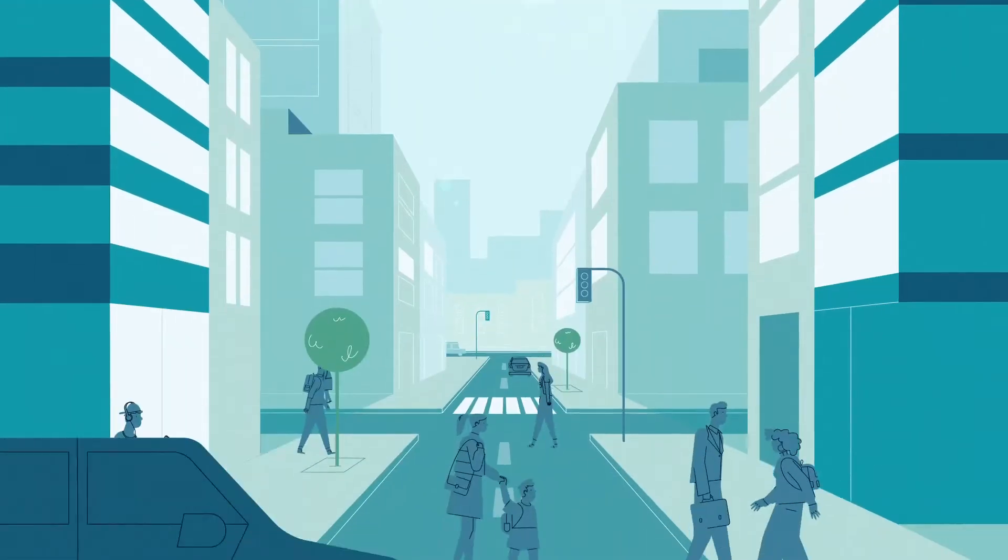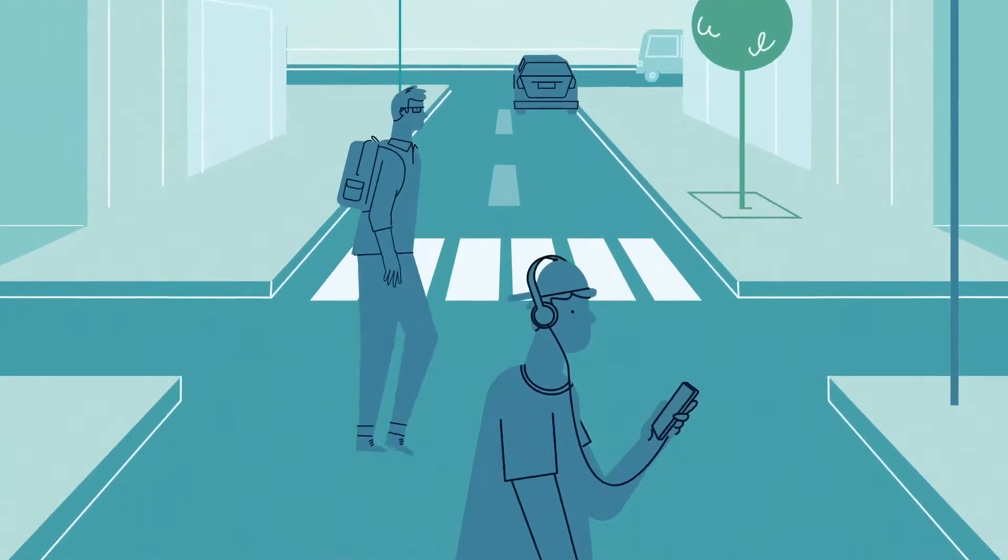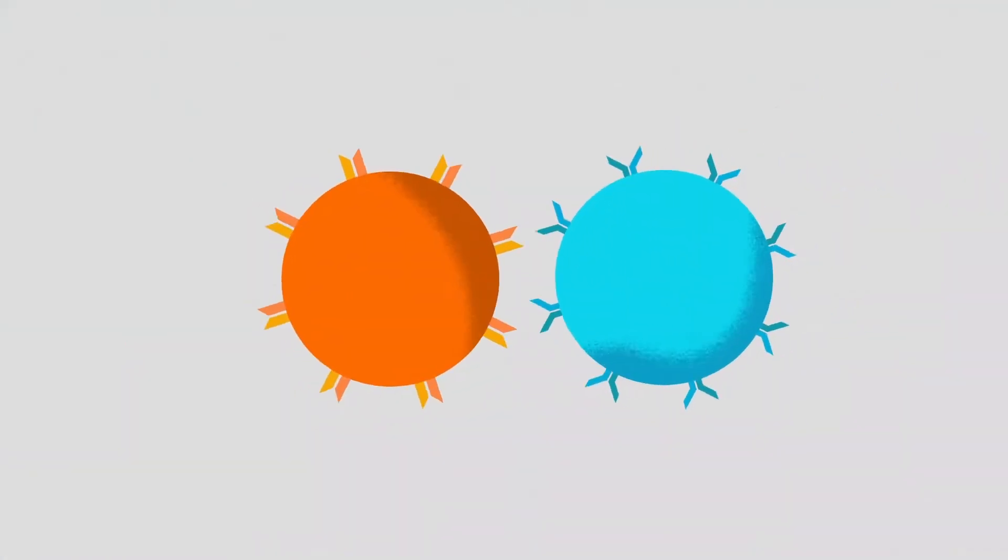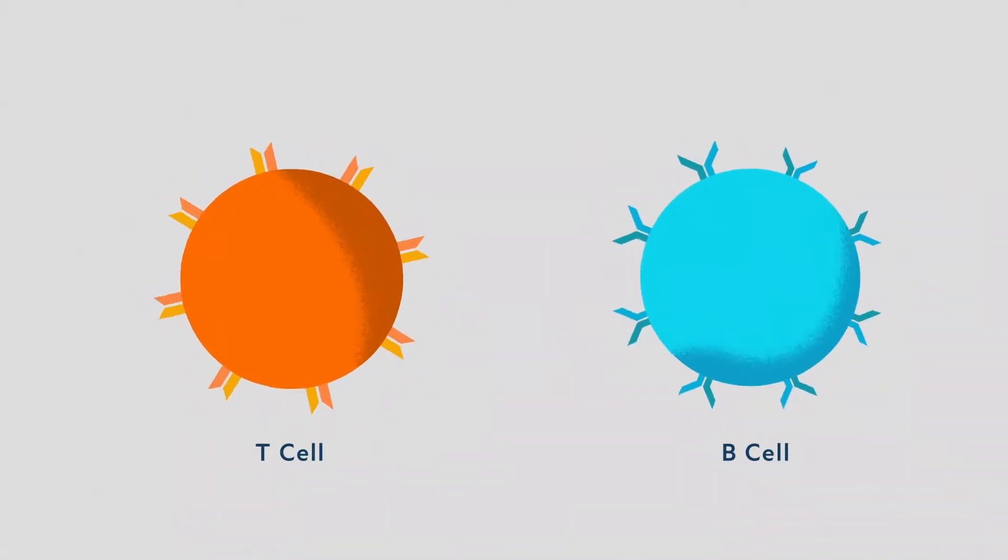Within your body, a unique and elegant story is unfolding. The story begins with the body's natural defenders, specialized cells of the adaptive immune system called T and B cells.